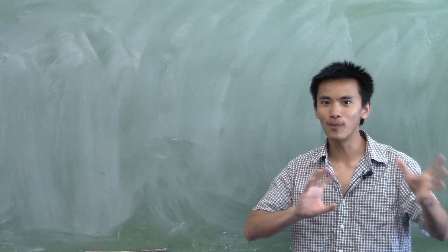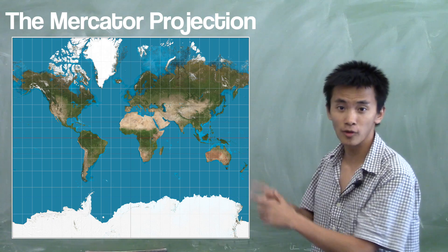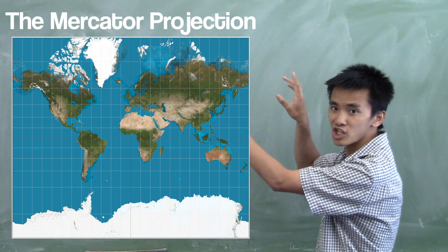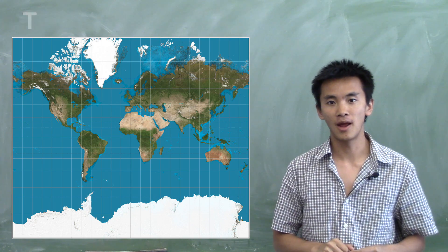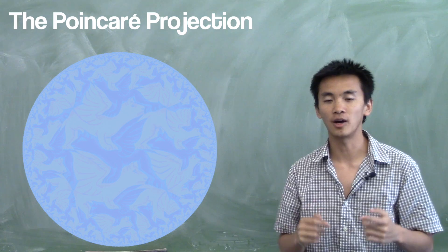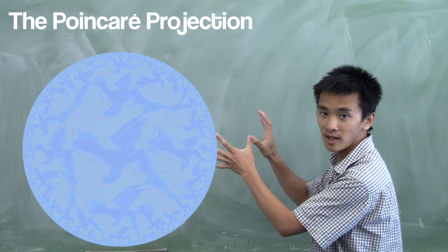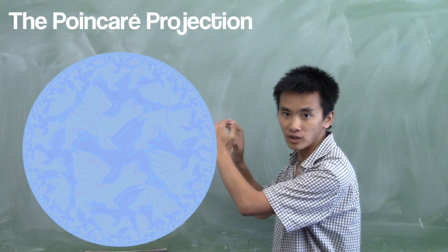So the idea of the Poincaré projection is kind of the opposite of the Mercator projection. Remember, the Mercator projection—in order to make it conformal, we had to stretch the countries near the boundaries of the map. Well, in the Poincaré projection, we're going to do the exact opposite. Namely, the spaces that are near the boundary of the map are going to be shrunk. In fact, they're going to be infinitely shrunk.